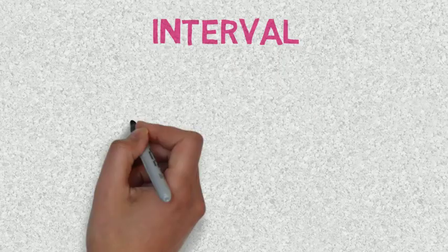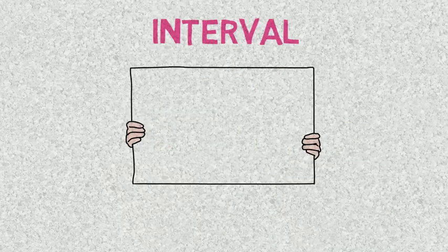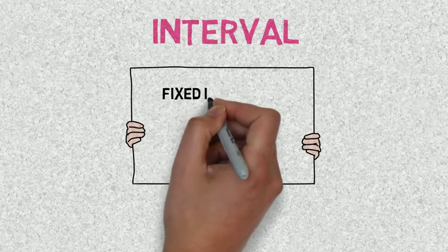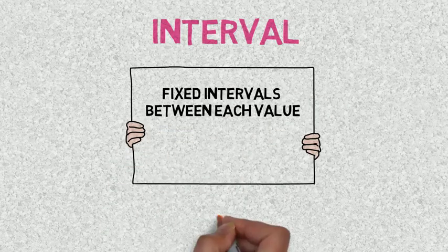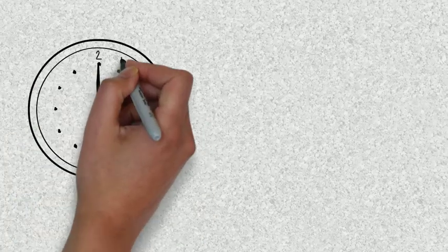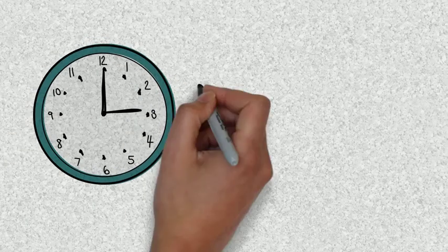Okay, interval level of data is a little bit more detailed, a little bit more scientific if you like. It's where there are fixed intervals between each value, and you're thinking, what does that mean? Here we go with the example of time. So if we take the example of time,